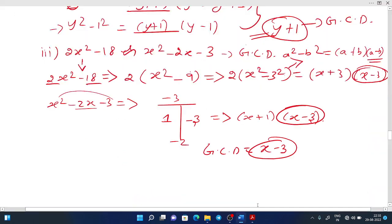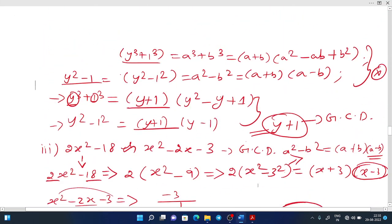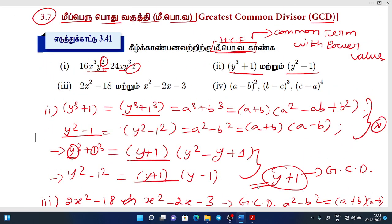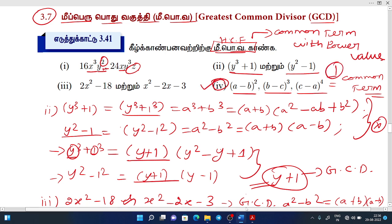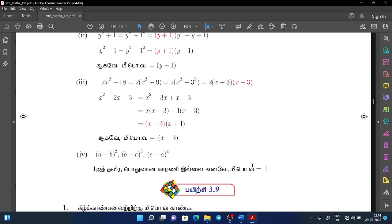The next example: (a - b)², (b - c)³, (c - a)⁴. There is no common factor here. It doesn't have to be HCF. The GCD value is 1. The answer is 1.